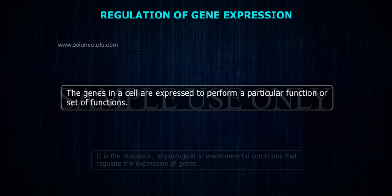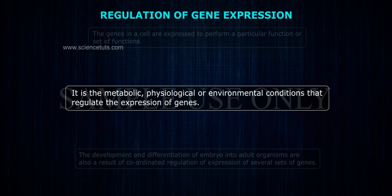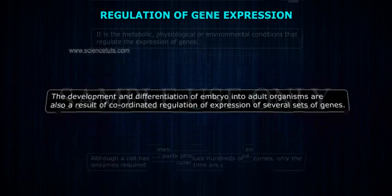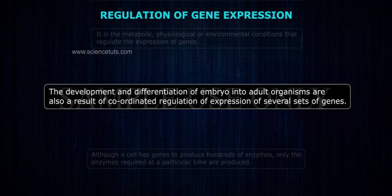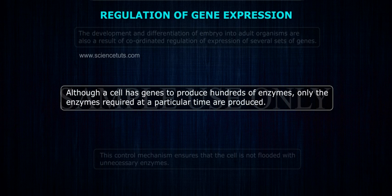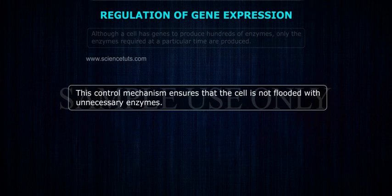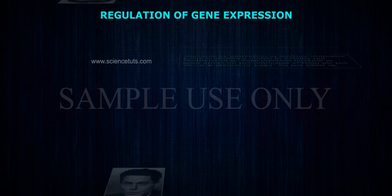The genes in a cell are expressed to perform a particular function or set of functions. It is the metabolic, physiological, or environmental conditions that regulate the expression of genes. The development and differentiation of embryo into adult organisms are also a result of coordinated regulation of expression of several sets of genes. Although a cell has genes to produce hundreds of enzymes, only enzymes required at a particular time are produced. This control mechanism ensures that the cell is not flooded with unnecessary enzymes.